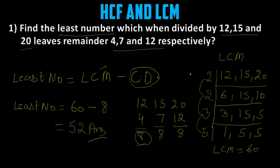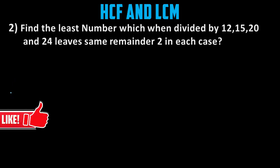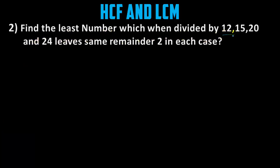Now we move on to our second question. Second question: find the least number which when divided by 12, 15, 20 and 24 leaves the same remainder 2 in each case. In this question also we have to find the least number, so first we find the LCM.